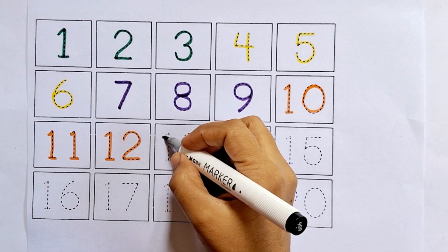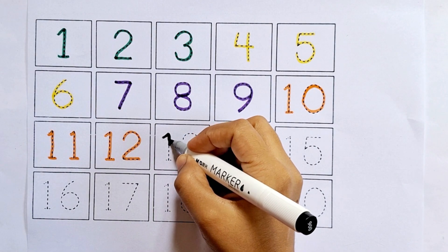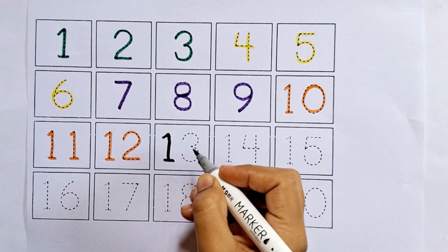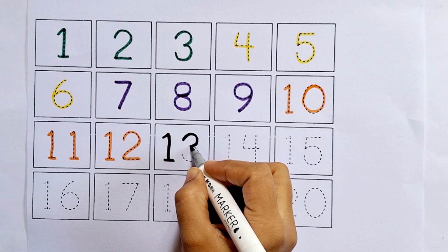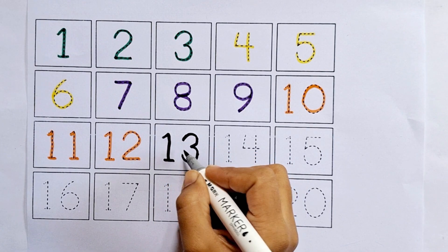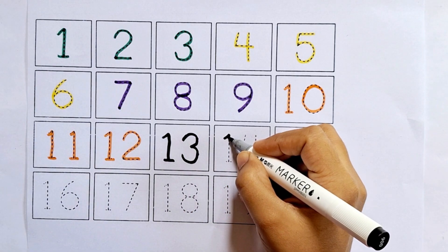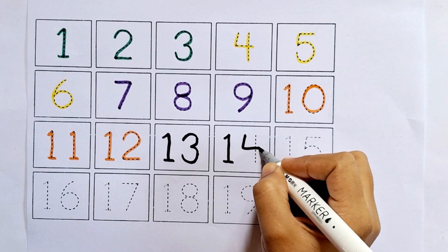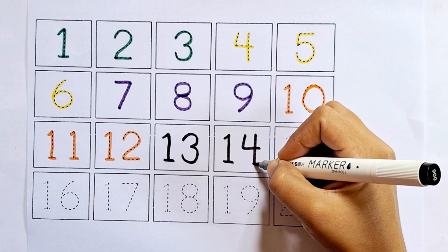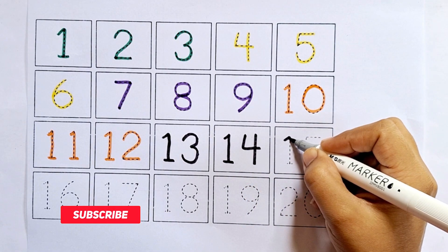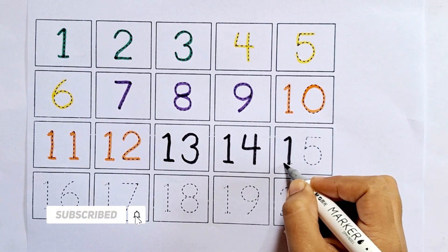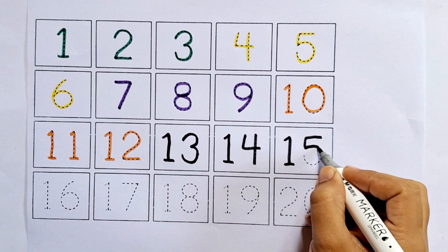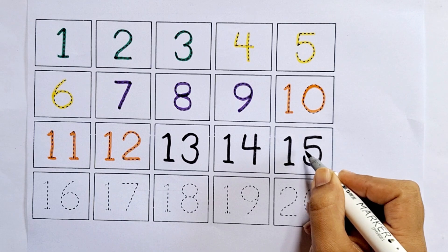Thirteen, one, three, thirteen. After twelve comes thirteen. Fourteen, one, four, fourteen. After thirteen comes fourteen. Fifteen, one, five, fifteen. After fourteen comes fifteen.